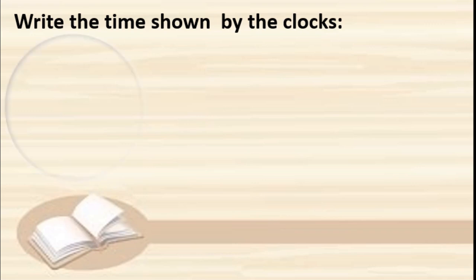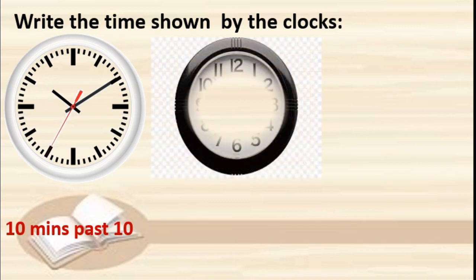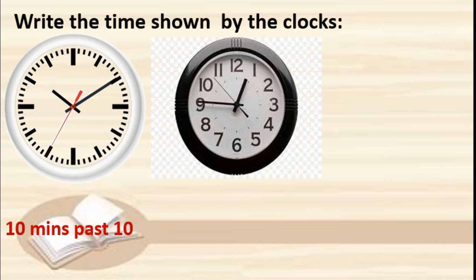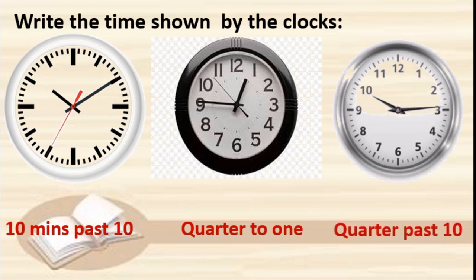Next clock: the minute hand is on 2 and the hour hand is between 10 and 11, so what is the time? It is 10 minutes past 10. Next: quarter to 1. And next: quarter past 10.